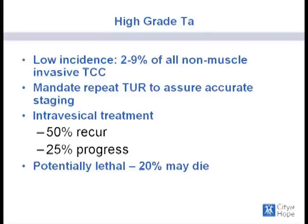When we move into the high-grade TA category, these are of low incidence because high-grade and TA usually should not go together. We think of TA as being low risk of progression, but it's the high grade we have to worry about. This usually requires a repeat TUR for accurate staging. Even with intravesical treatment, about 50% of these lesions will recur and 25% will progress. Ultimately it is a potentially lethal disease, as 20% of patients may die.